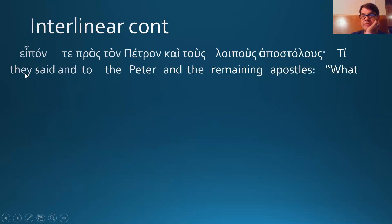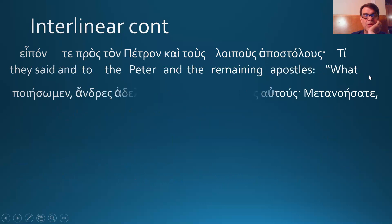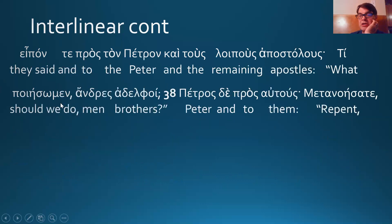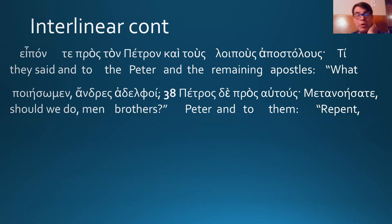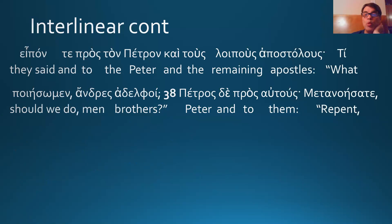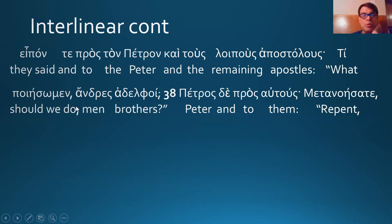And they said — aorist, active, indicative, third plural. They said to Peter and the rest of the apostles: 'What should we do?' I mentioned that this was a deliberative subjunctive, first person plural ending. The 'men' ending — note that a nu with an epsilon in front of it is almost always a movable nu, but when you have the ending 'men,' it's a real men — first person plural, 'we.' A long vowel before an ending is often a sign of a subjunctive, and it is here. The sigma in the subjunctive indicates aorist. So: 'What should we do? Men, brothers' — vocative.